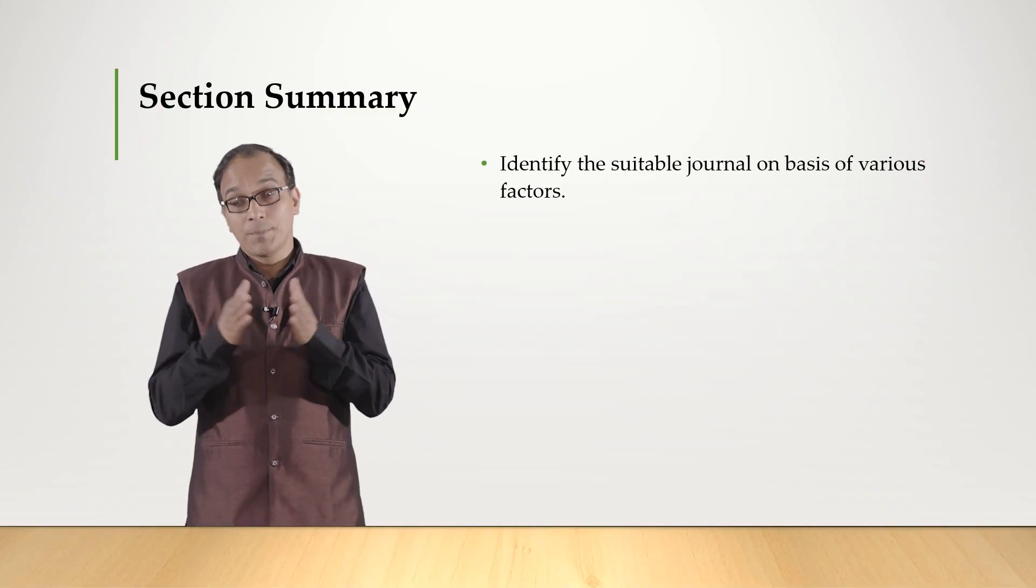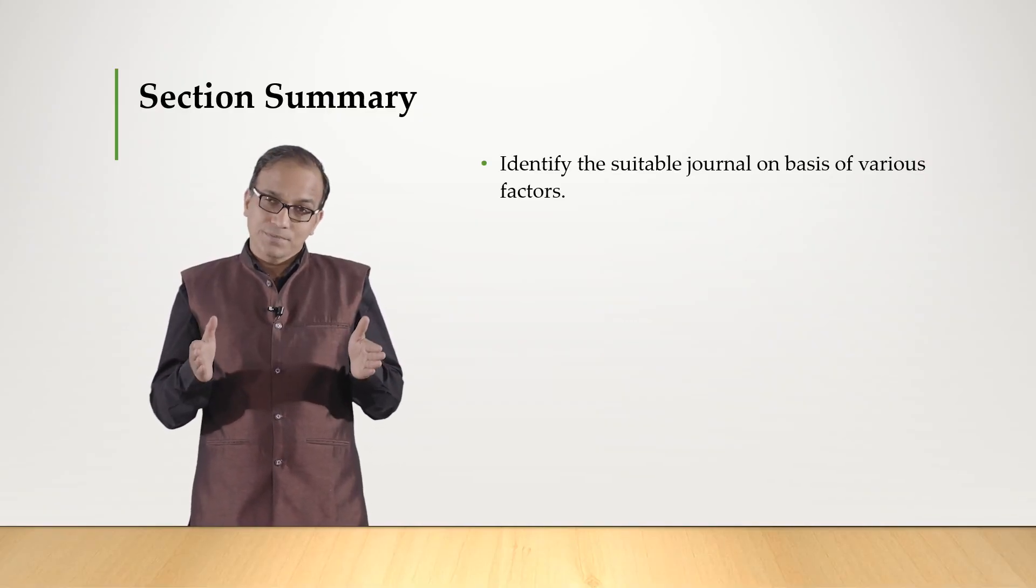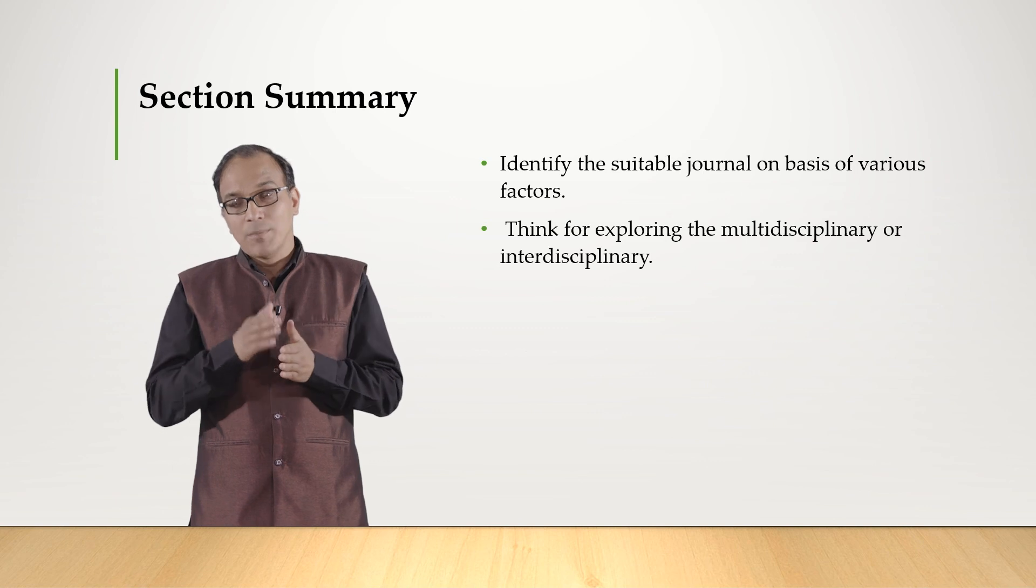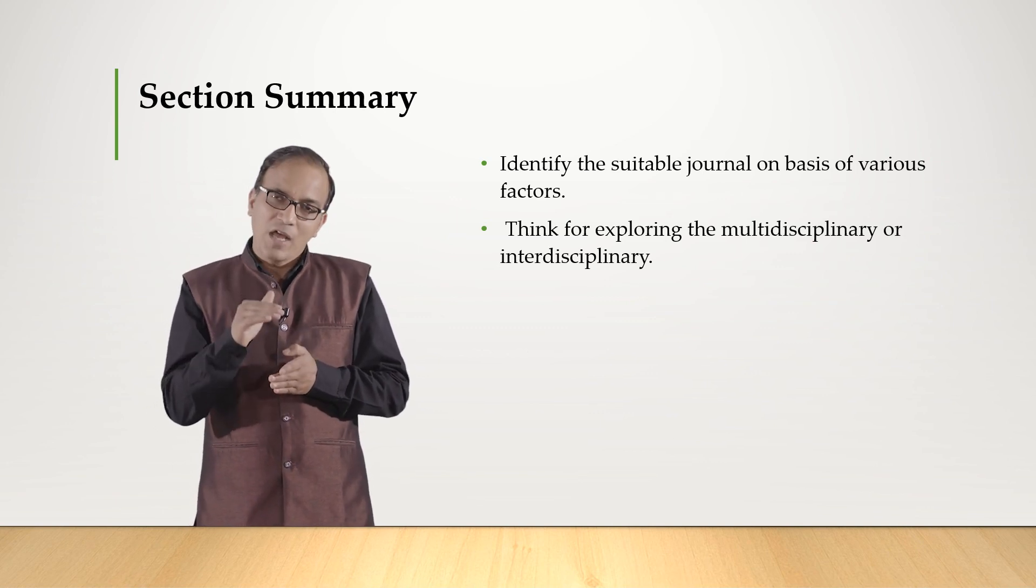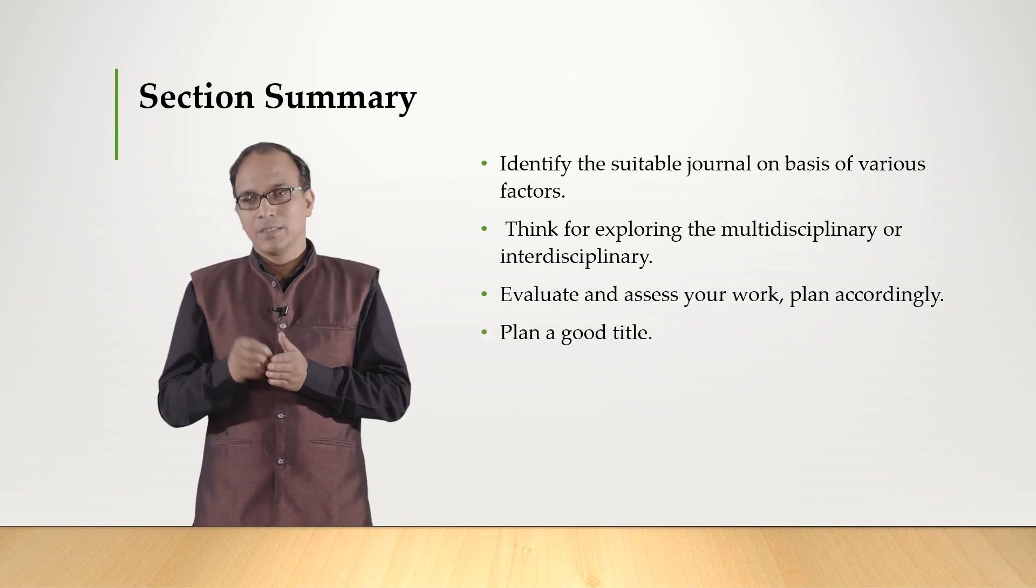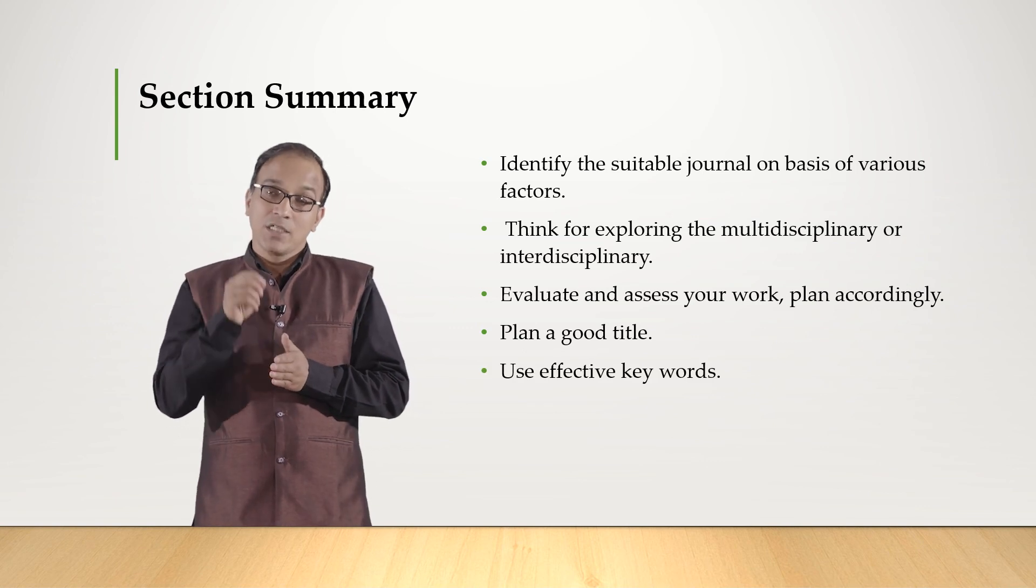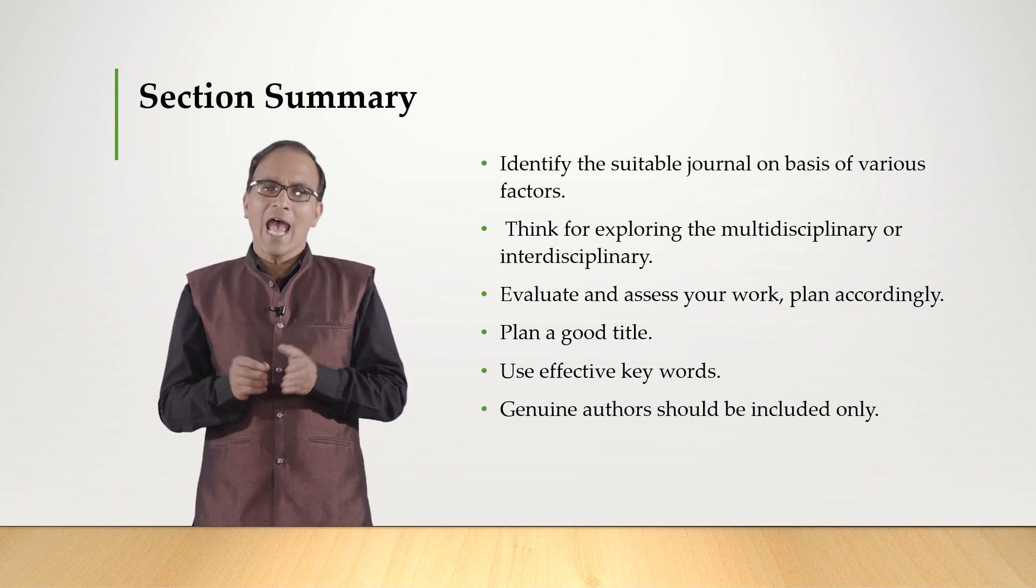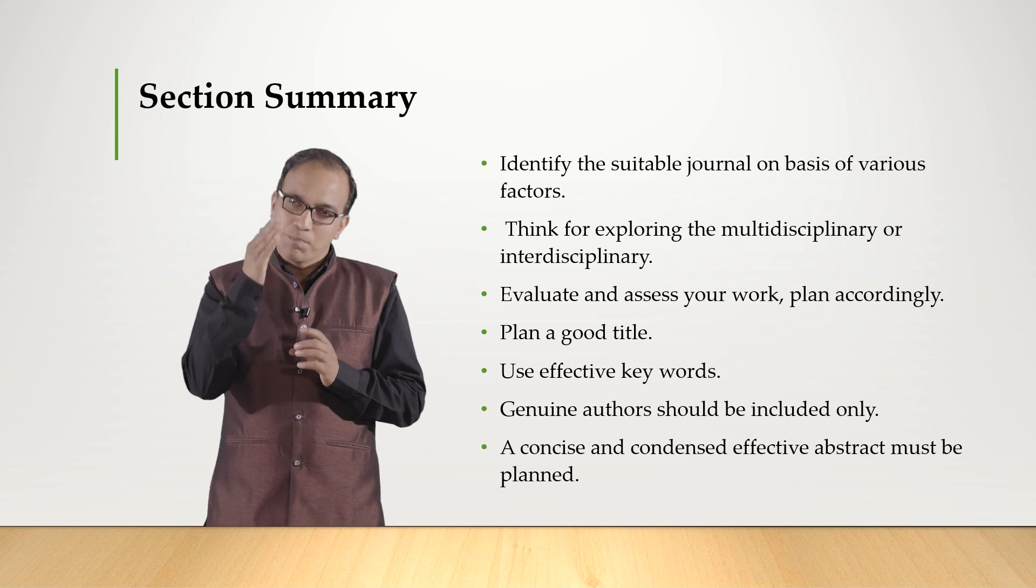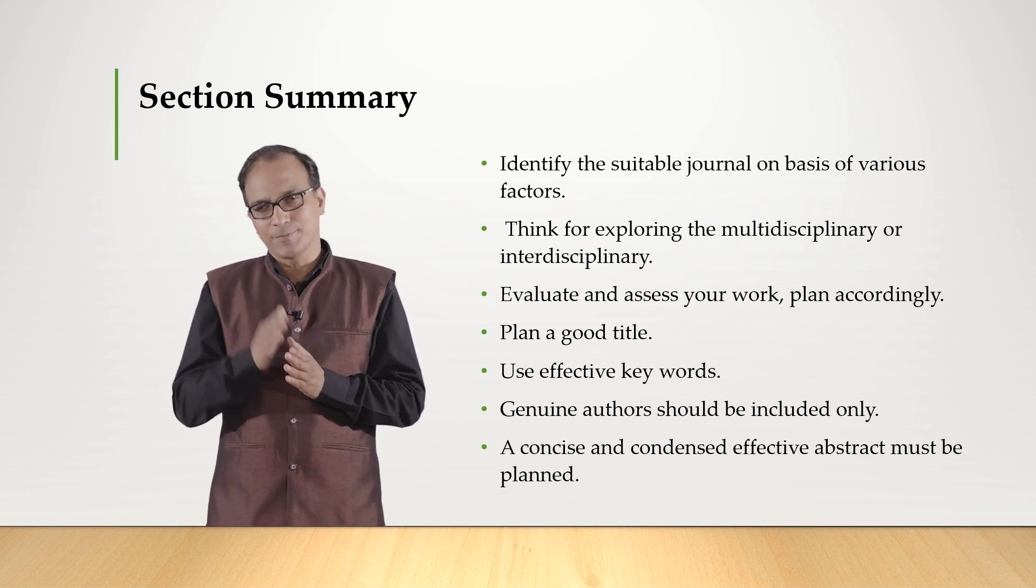Apart from that, various tactics are being planned. So I will summarize in this section: identify a suitable journal on the basis of various factors, explore the multidisciplinary interdisciplinary journals, evaluate and assess your work, plan accordingly, plan a good title, use effective keywords, genuine authors should be included only, and a concise and condensed effective abstract must be planned. We will be covering other aspects in the next section.